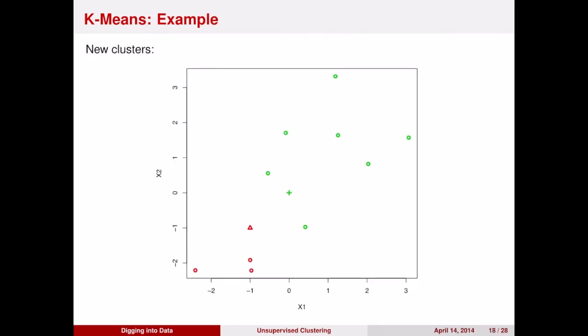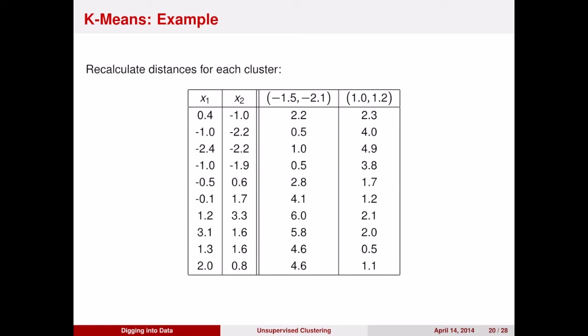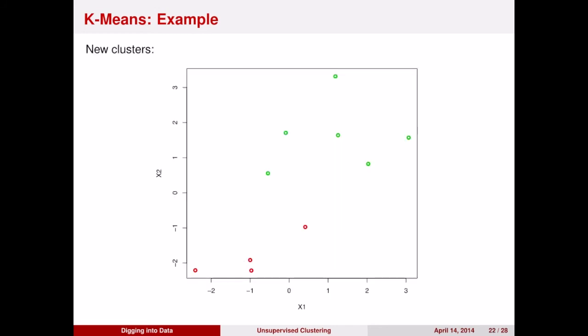After we do that, we have these clusters. But now we need to change the means of the clusters to reflect the data in those clusters. So the red mean moves down and to the left, and the green mean moves up and to the right. We now have two means: the red one at negative 1.5 and negative 2.1, and the green one at 1 and 1.2. We again calculate the distances to each of the cluster means from each data point. That gives us a new assignment to clusters based on the one that's closest. And now we recompute the means. The red cluster moves a little to the right, but the green cluster doesn't change too much.